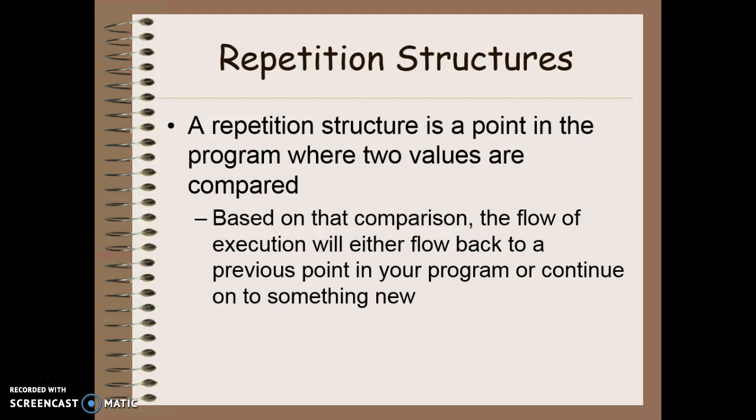We're going to compare two values, and based on the comparison, we're either going to flow the execution back to a previous point in our program or continue on to something new. So again, very similar to selection structures. We have two things that might happen, but in this case, the difference is that one of those things means that we might go backwards to a previous point in our program, whereas in selection structures, both of our options went on to something new.